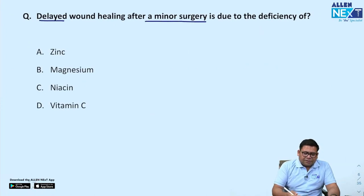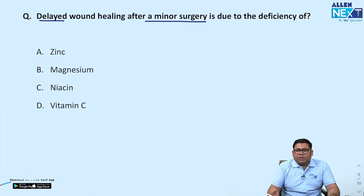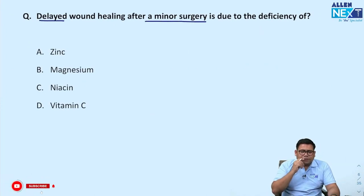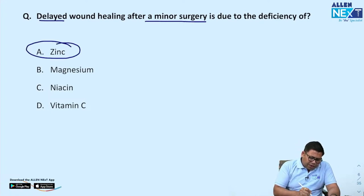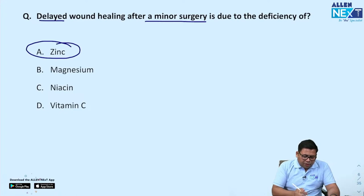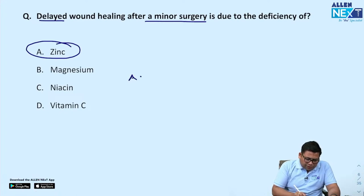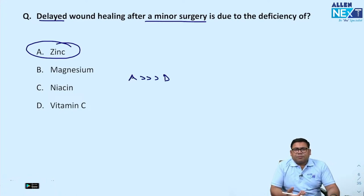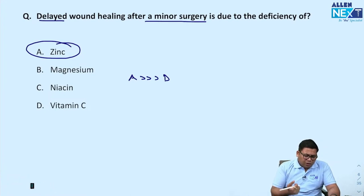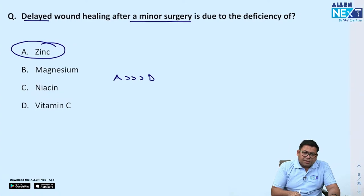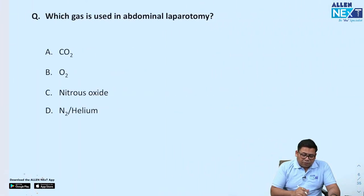Delayed wound healing in minor surgery is due to zinc deficiency. Zinc and silver are very important agents for healing. Zinc is the answer here — zinc is very important compared to vitamin D, vitamin C, or vitamin A in this context.